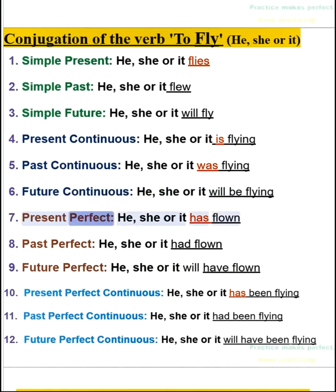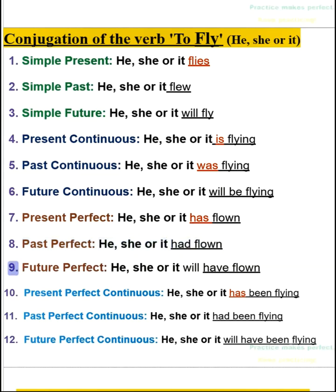7. Present perfect — he, she, or it has flown. 8. Past perfect — he, she, or it had flown. 9. Future perfect — he, she, or it will have flown.